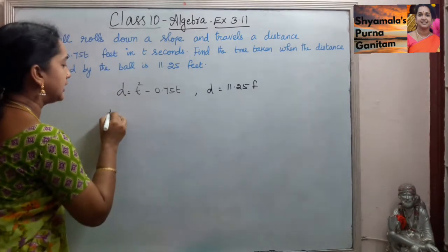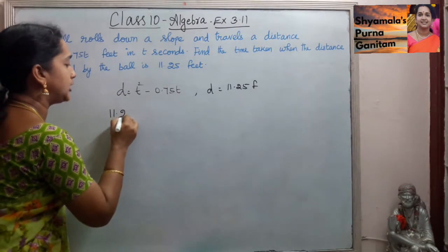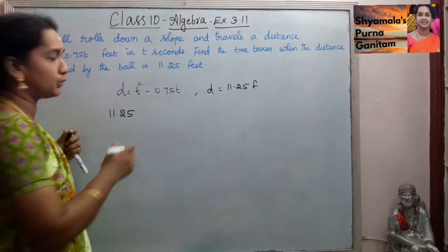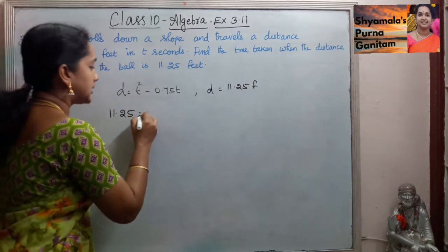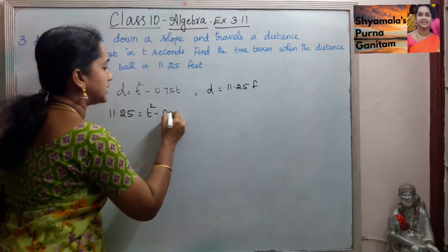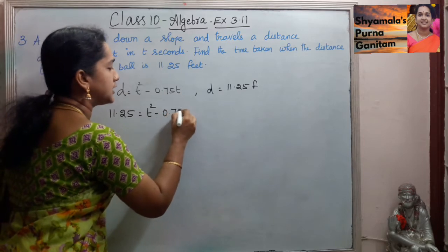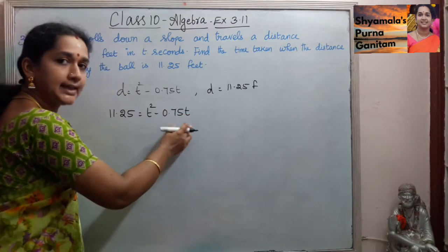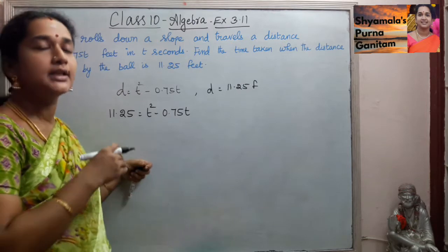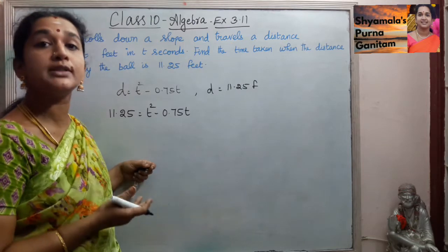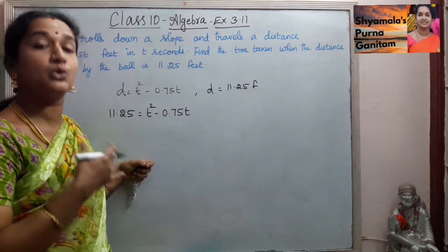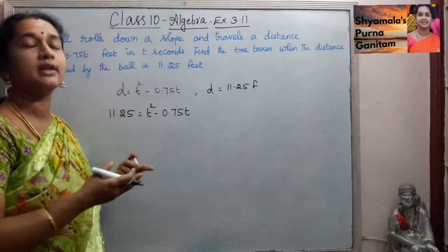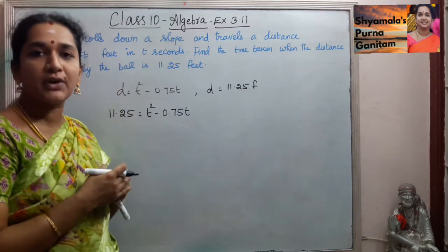So, d is 11.25. Here d equals 11.25, which equals t squared minus 0.75t. Since t squared, t, and a constant term are present, if we use the quadratic formula, we will get a quadratic equation here.